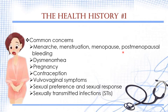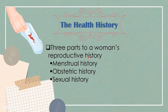For the health history, you have to focus on the following common concerns: menarche or first menstruation, menstruation, menopause, postmenopausal bleeding, dysmenorrhea, pregnancy, contraception or use of contraceptives, vulvovaginal symptoms, sexual preference and sexual response, and sexually transmitted infections or STIs. There are three important parts of a woman's reproductive history to gather: the menstrual history, the obstetric history, and the sexual history.